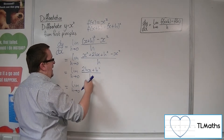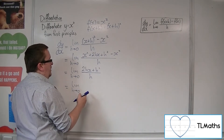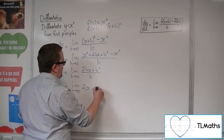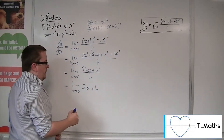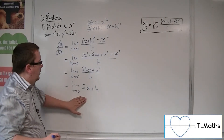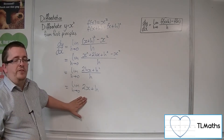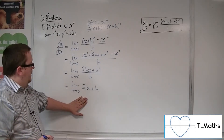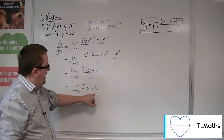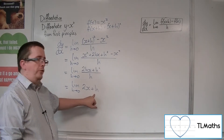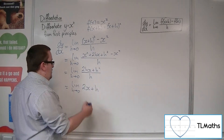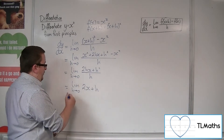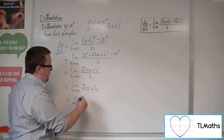Now this fraction we can simplify — cancel h top and bottom, which leaves us with 2x plus h. Thinking about what happens to 2x plus h as h tends to 0, the h gets smaller and smaller and smaller, and so this goes to just 2x.